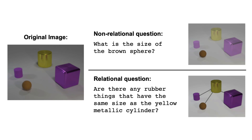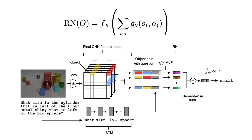While the second question, 'Are there any rubber things that have the same size as the yellow metallic cylinder,' is a relational reasoning task, because it asks about the properties of an object in relationship with the other ones. This is the architecture for relational networks, and in it we have the capacity to compute relations without needing them to be learned — just as spatial translation invariant properties are built into CNNs. Definitely read this paper if you find the topic interesting.